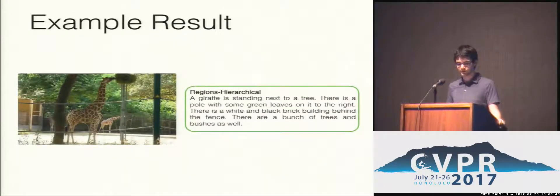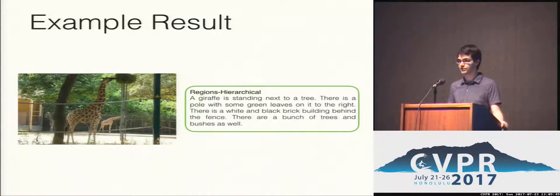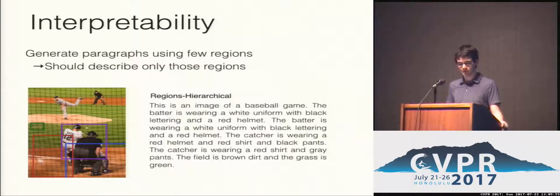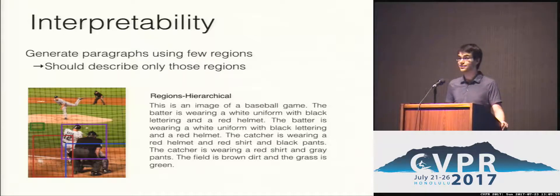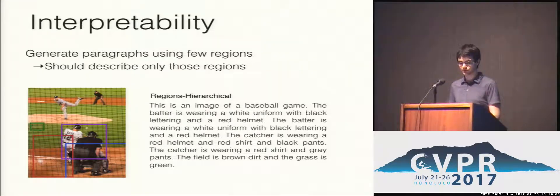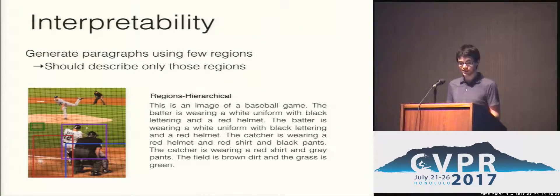Here we show an example result where our model is able to produce a long, detailed description. Our model also has advantages in interpretability. By limiting the regions output by the region proposal network, we can force the model to describe only subsets of the image. Although this experiment is very out of sample compared to the type of training data the model saw, results are encouraging in describing only the selected regions.